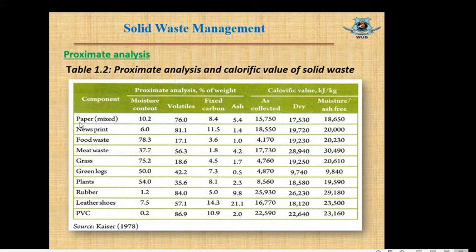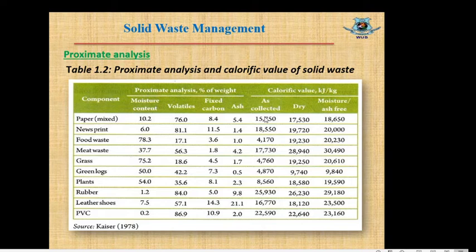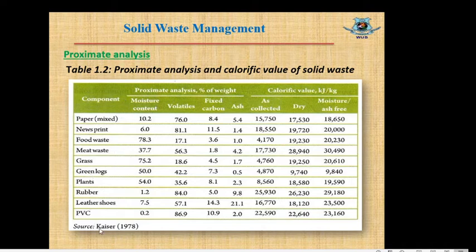This is the proximate analysis and calorific values table for solid waste. These four items — moisture content, volatile combustible matter, fixed carbon, and ash — comprise the proximate analysis by percentage of weight. The three remaining items are calorific values, i.e., energy content. For example, for the paper mixed item, the four proximate analysis items sum to 100%. The energy content of mixed paper as collected is one value; if dried, we get 17,530 kJ/kg; and as moisture- or ash-free, 18,650 kJ/kg. This data is taken from Tchobanoglous (Keiser).